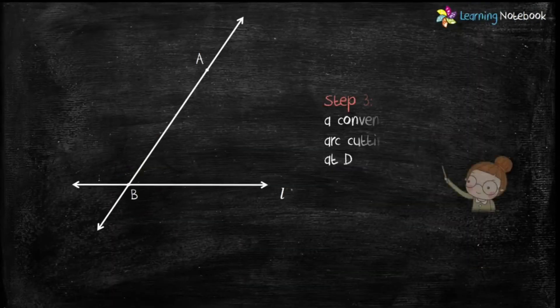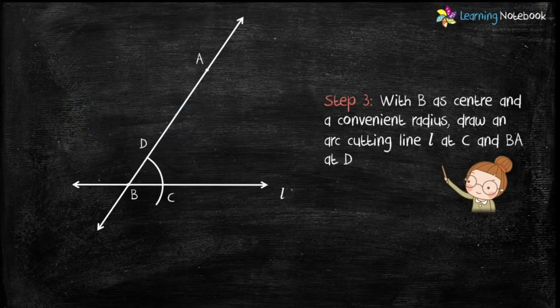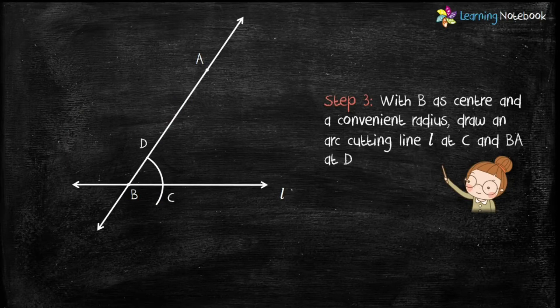In step 3, with B as center and convenient radius, draw an arc which cuts the line L at point C and line BA at point D.